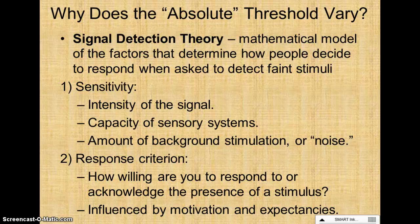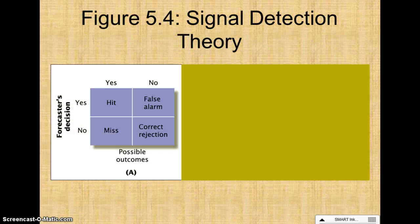Response criterion has to do with motivation and expectancy — again related to top-down processing. It refers to how willing you are to report that something is present. There are situations where you'd be much more willing to say something is present because an error in one direction could be more detrimental than an error in the other direction.